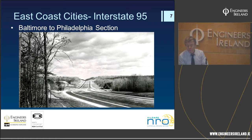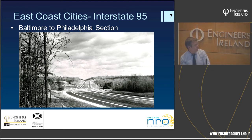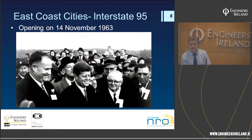The Baltimore to Philadelphia section between Washington and New York was a key section of Interstate 95, developed in the early 1960s in nearly record time — about two and a half years. It incorporated the thinking on motorway design standards: very broad curves with minimum radii of 700 metres, maximum gradients of 4%, and wide medians for safety in the event of a car losing control, and also for future upgrade of the motorways. This photo shows the opening of the Baltimore to Philadelphia section — you can see John F. Kennedy, about a week before he died.